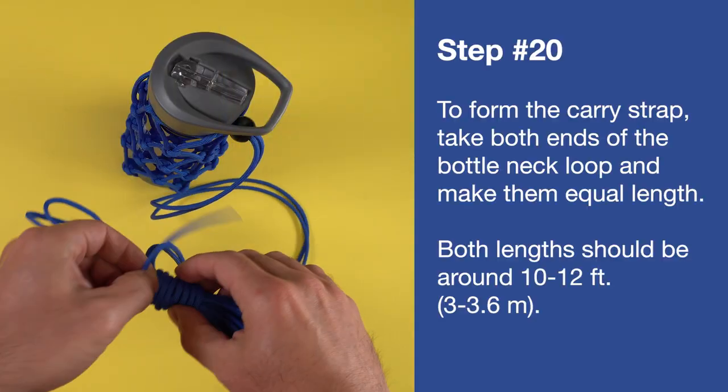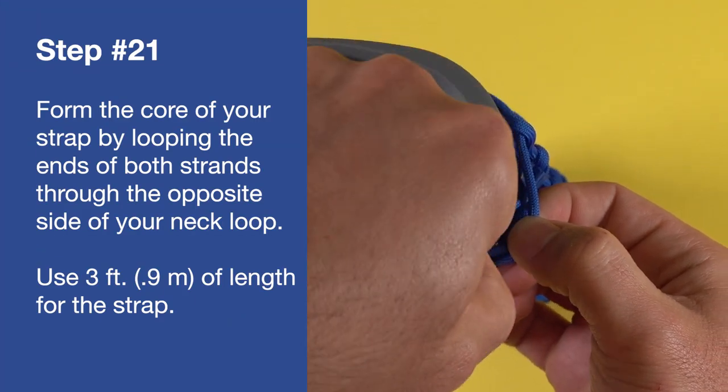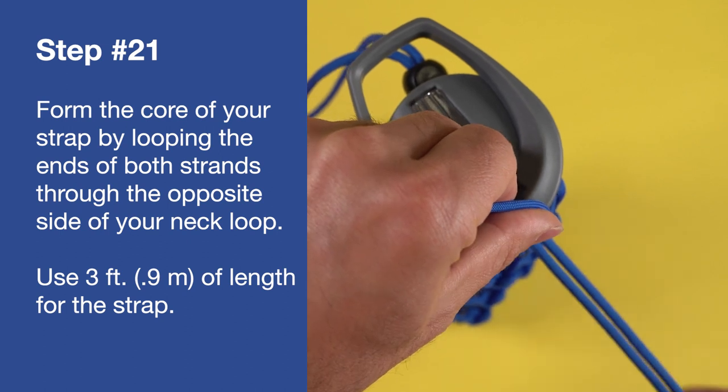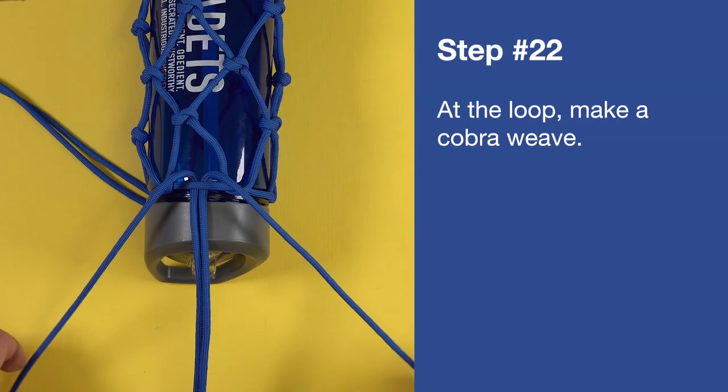To form the carry strap, take both ends of the bottleneck loop and make them equal length. Form the core of your strap by looping the ends of both strands through the opposite side of your neck loop. At the loop, make a cobra weave.